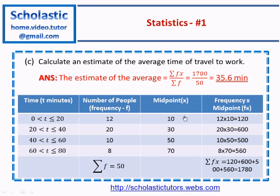We need to calculate the average. This average is actually an estimate. What you do here is add two more columns: midpoint column and a frequency times midpoint column. Get the midpoint of the classes—0 to 20 midpoint is 10.